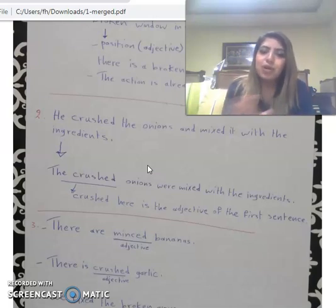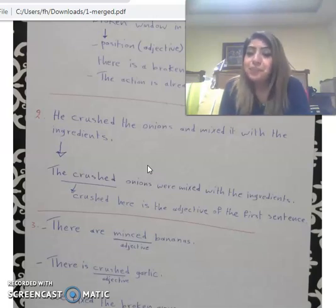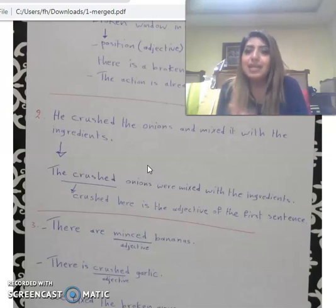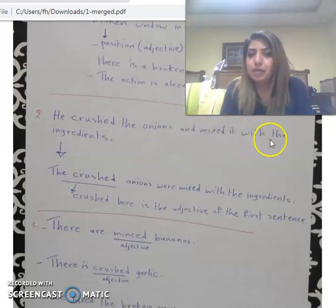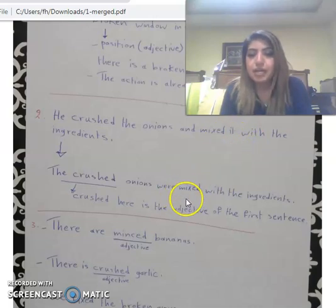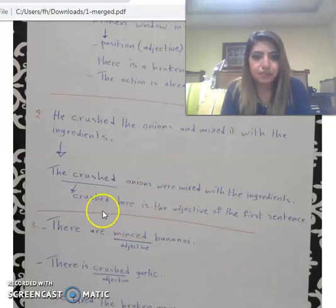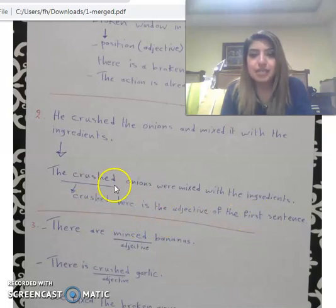البصل المصحوق، اللي تم معسه بطريقة جيدة، تم تخليطه مع المكونات — الـ ingredients. هون 'mixed' جاي هي الفعل تبع الجملة. So 'crushed' here is the adjective of the first sentence.